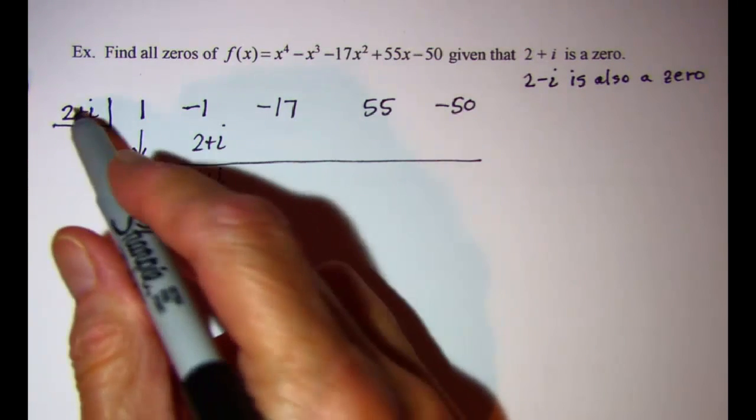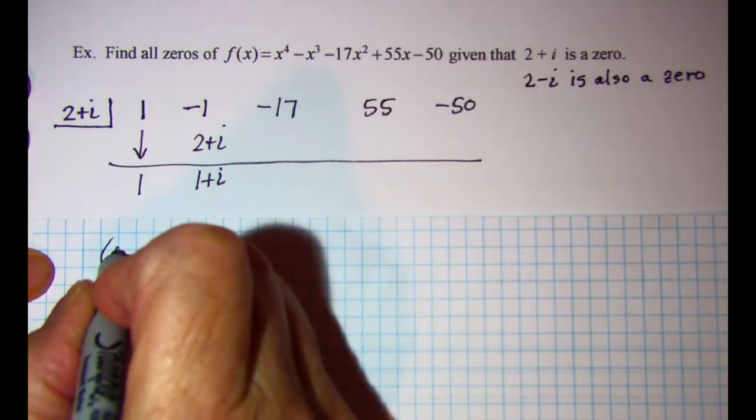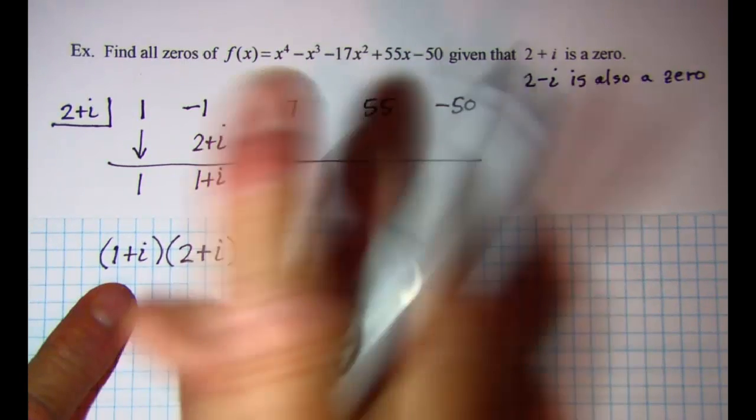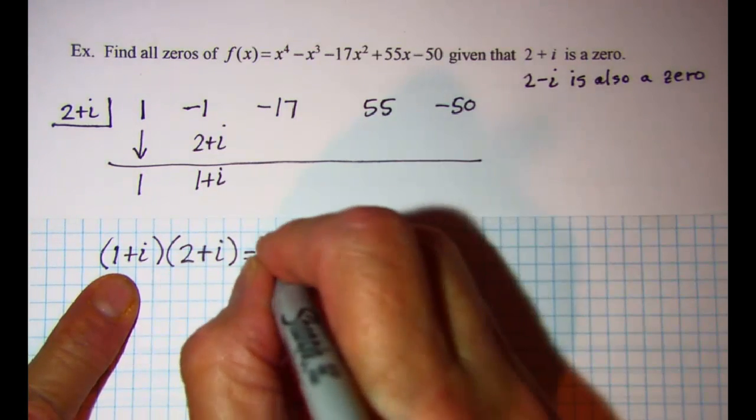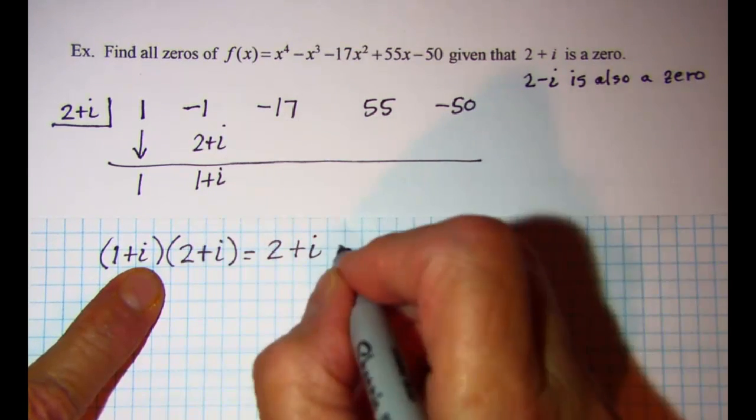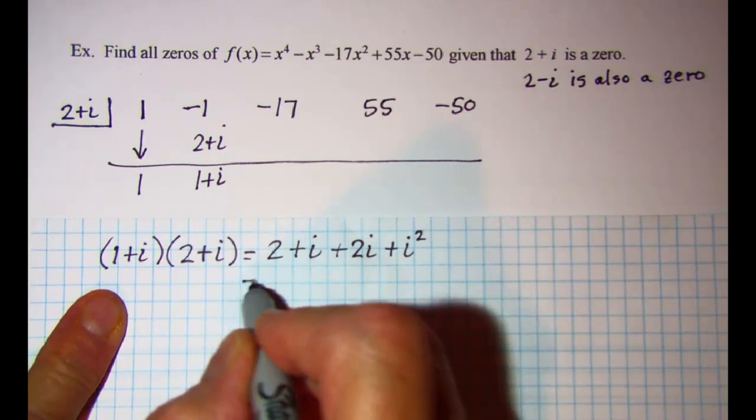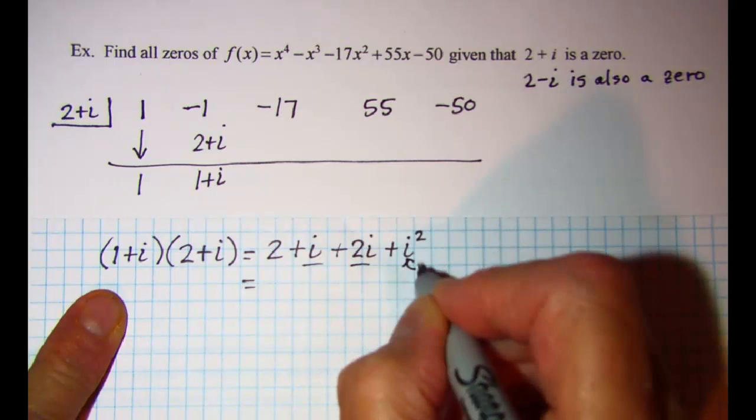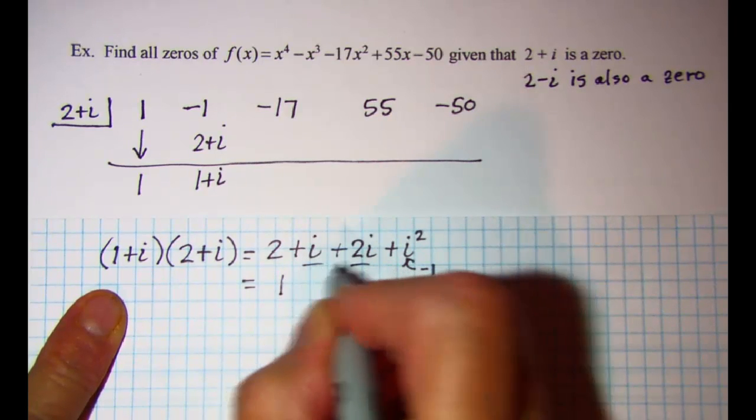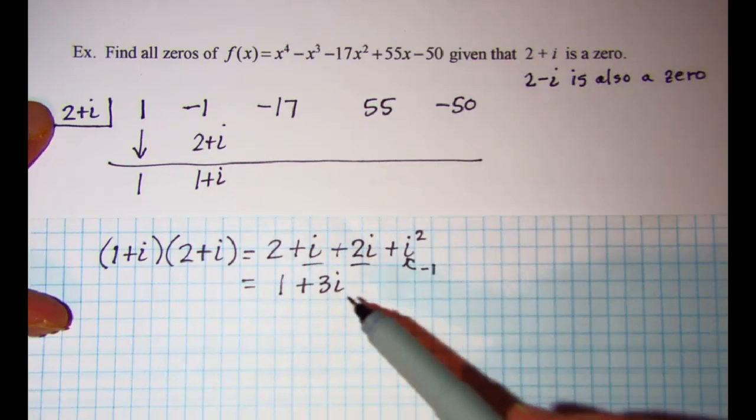Now we're going to need to multiply these two numbers together. 1 + i multiplied by 2 + i. I'll use FOIL. So 2 + i + 2i + i^2. We're going to combine these. This is a -1 by definition. So 2 added to -1 gives me 1 and then +3i. So my product of these two numbers is 1 + 3i.